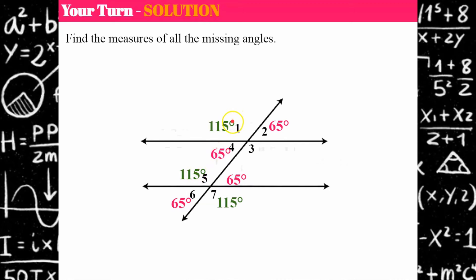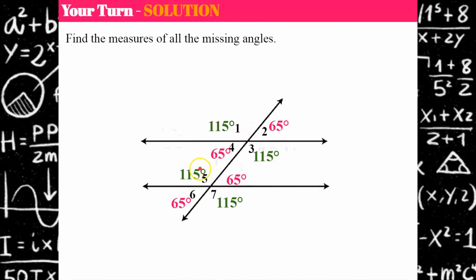Angle 7 is 115 degrees — I can get this because the given angle and angle 7 are supplementary and have a sum of 180 degrees. Angle 5 is 115 degrees because angles 5 and 7 are vertical and congruent. You could also use that angles 5 and 6 are supplementary. Angle 1 corresponds to angle 5 and is congruent; angle 1 and angle 7 are alternate exterior angles. Angles 1 and 2 are supplementary, angles 1 and 4 are supplementary. Angle 3 is 115 degrees — angles 1 and 3 are vertical angles, angles 2 and 3 are supplementary, angles 3 and 7 are corresponding, and angles 3 and 5 are alternate interior angles.